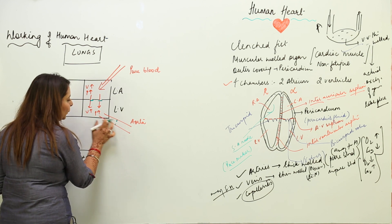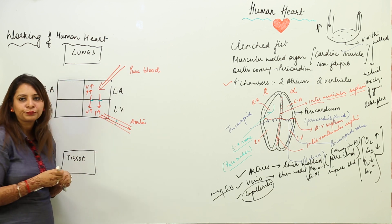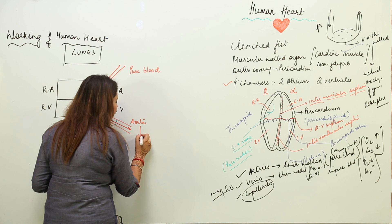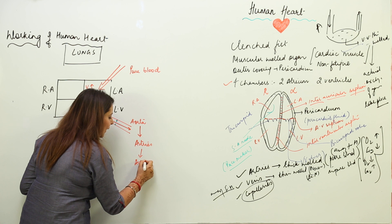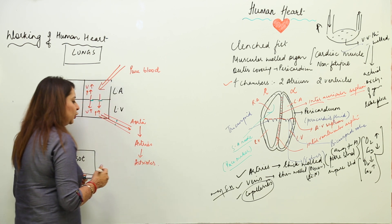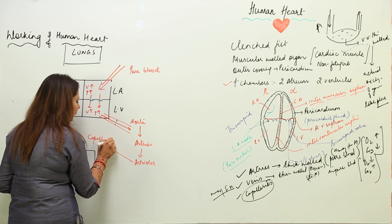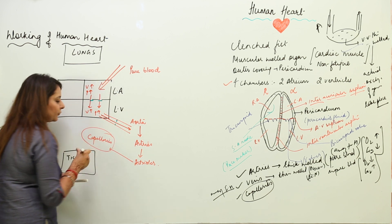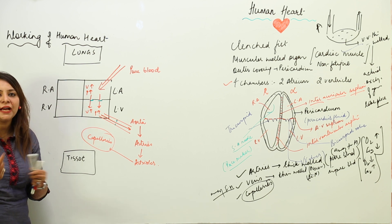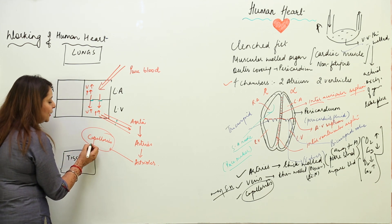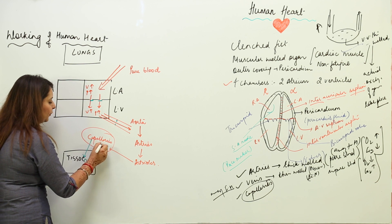Blood starts flowing from the left ventricle to the aorta. The aorta then divides into arteries, arteries divide into smaller arterioles, and arterioles further divide into capillaries. Capillaries are the vessels through which the exchange of gases takes place.